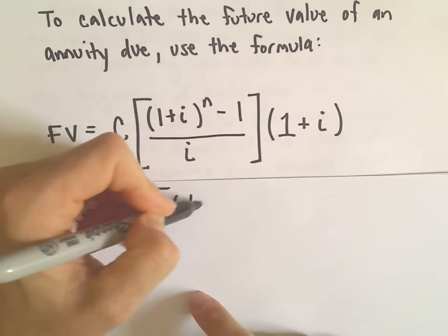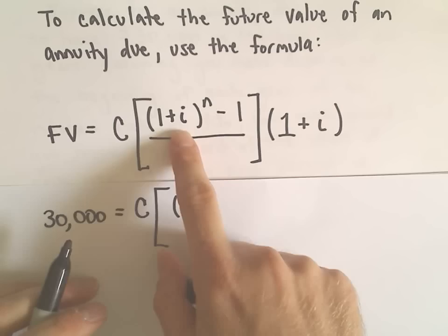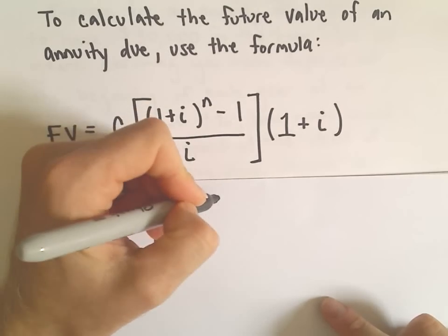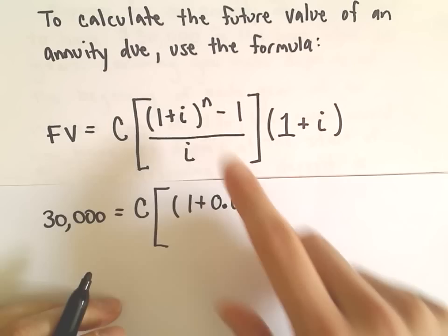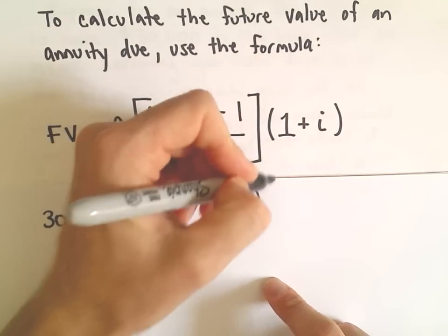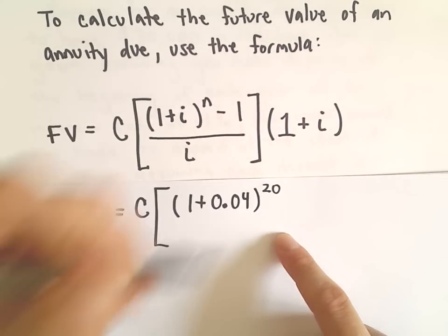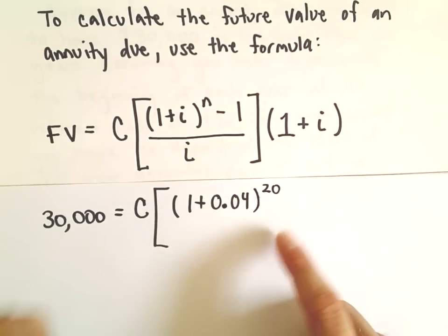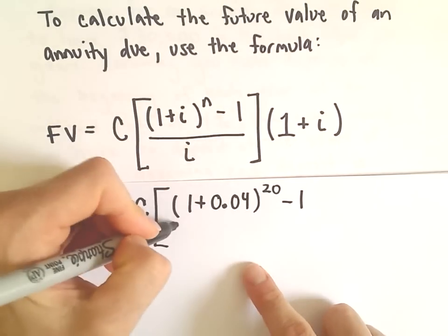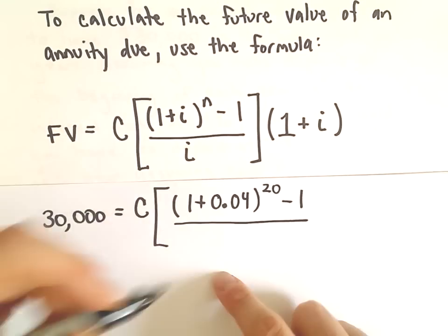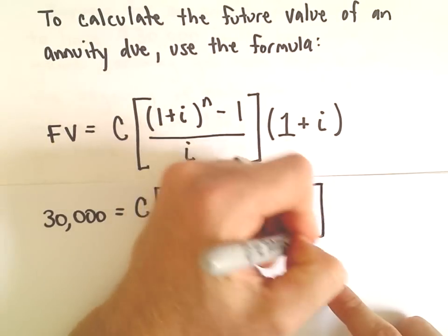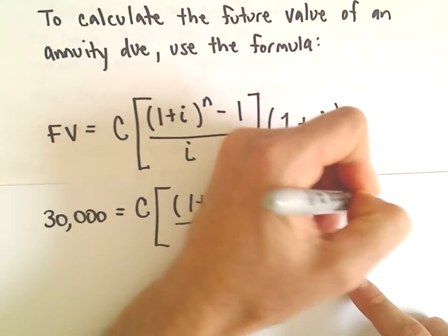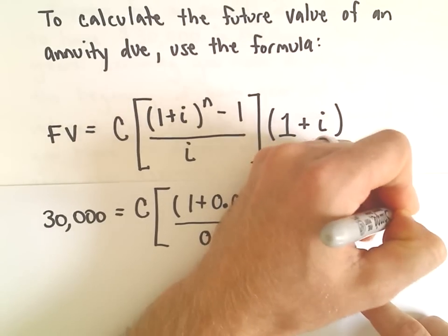And then we do 1 plus the interest rate. We're doing 4%, but as a decimal, that's 0.04. N is going to be the number of deposits. So we said we were going to do this over the course of 20 years, so we'll make 20 deposits. And then we subtract 1, divide by the interest rate, which is 0.04. And then we'll multiply that by 1 plus 0.04.